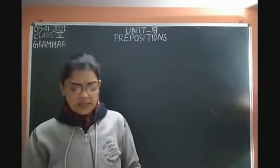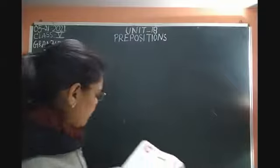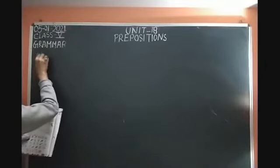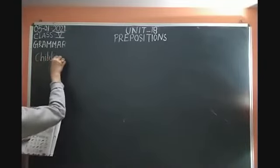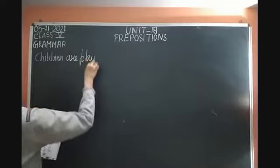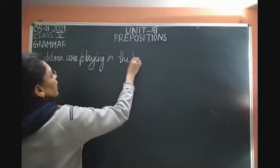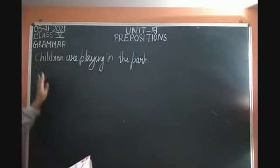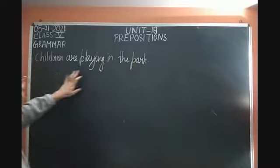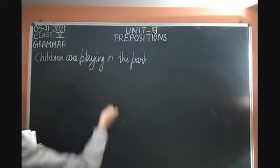Now let's understand prepositions with the example of a paragraph. Look at this paragraph. The first sentence is: Children are playing in the park. 'Children' is a noun, 'park' is a noun. So where are the children playing? The word that shows the relationship between these two nouns is 'in the park.'